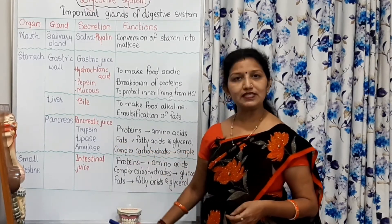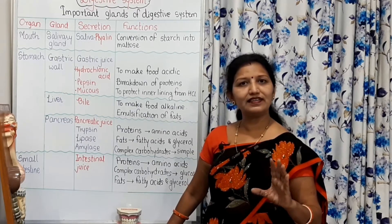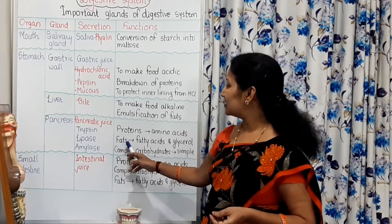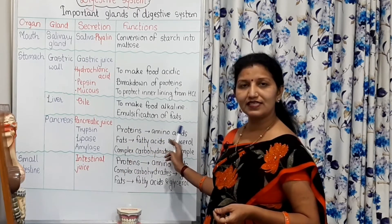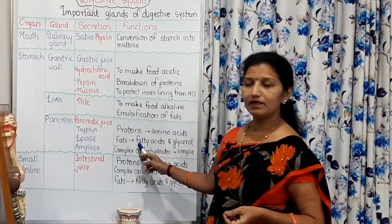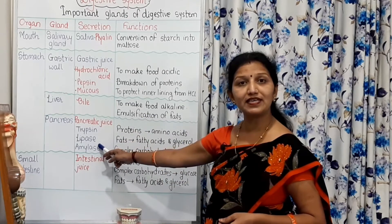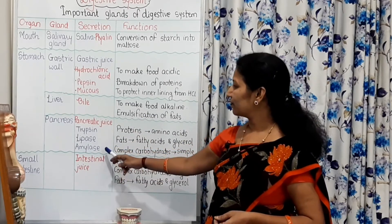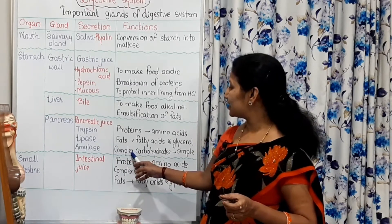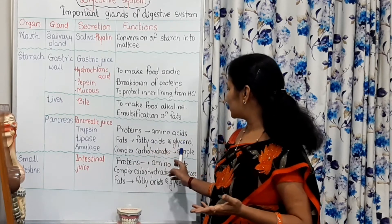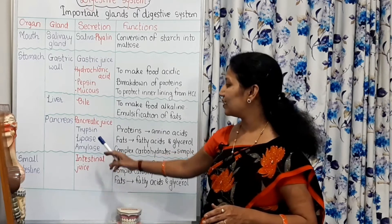Then, lipase. As the name indicates, it acts on lipids — lipids are nothing but fats. These fats are converted into fatty acids and glycerol by the action of lipase; these are the end products of fats. Then amylase — complex carbohydrates are converted into simple carbohydrates or simple sugars by the action of amylase.